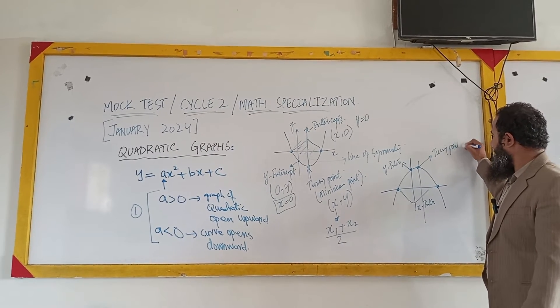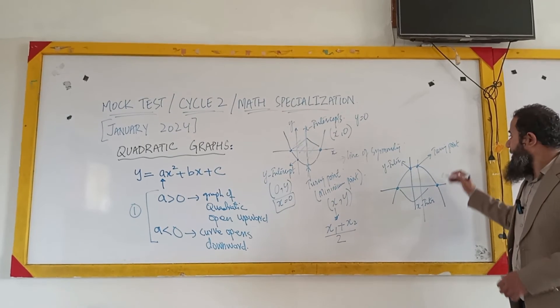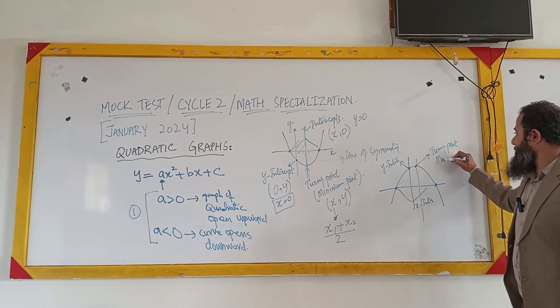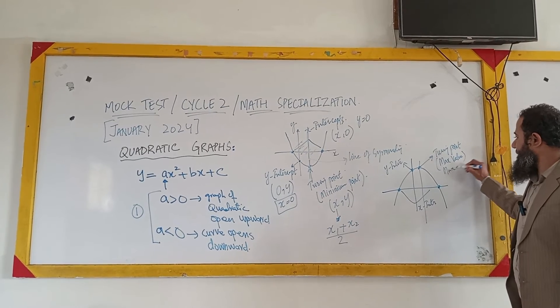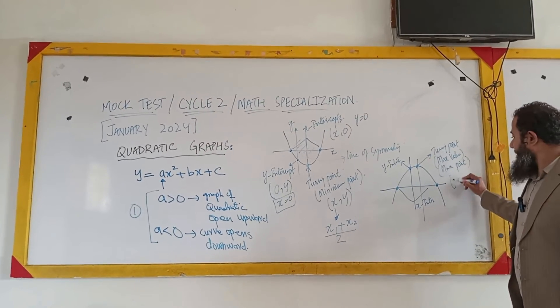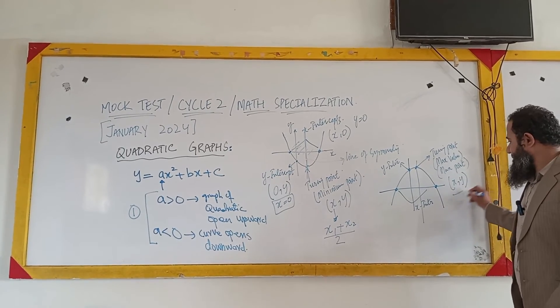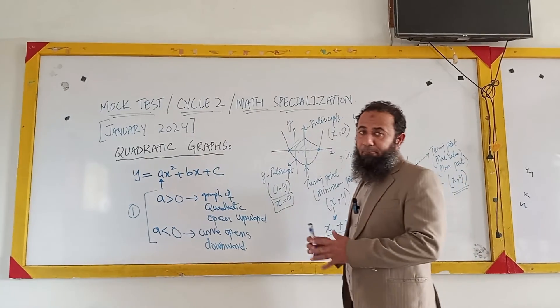This point is called the turning point of the curve, but in this situation, when the curve opens downward, the turning point shows you the maximum value or the maximum point for y, and its coordinate will be x comma zero. I hope you understand this concept very well.